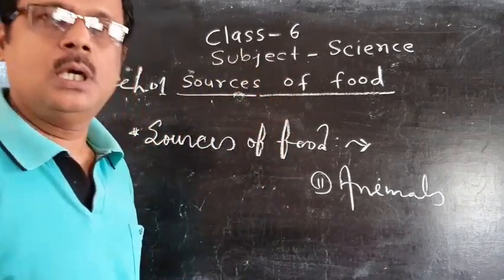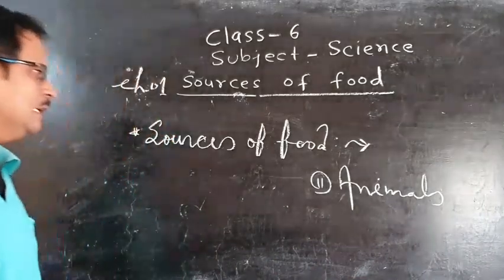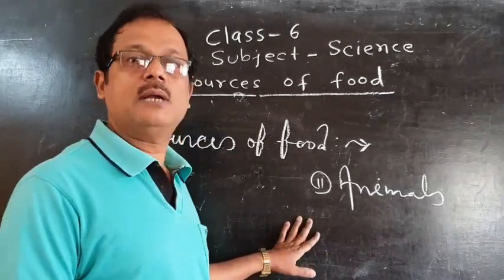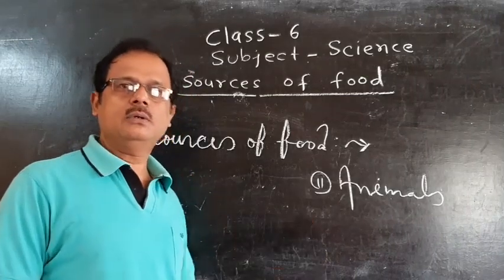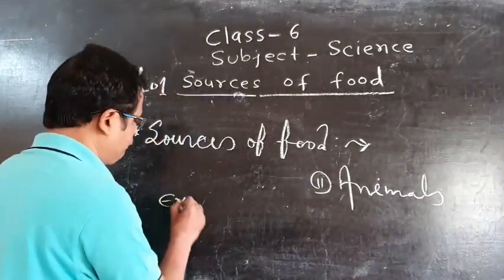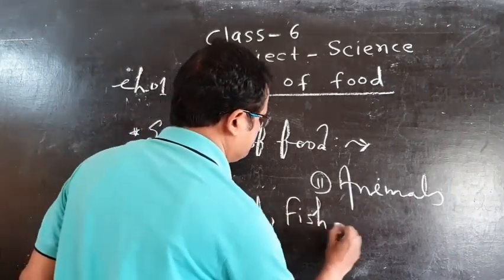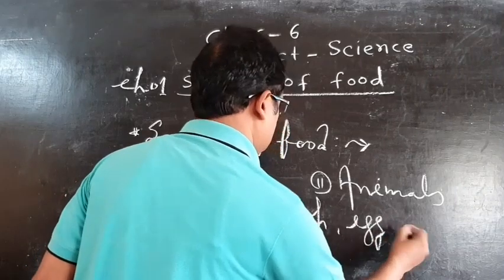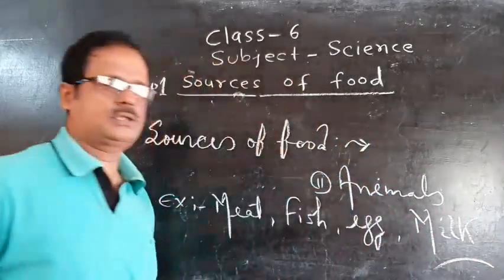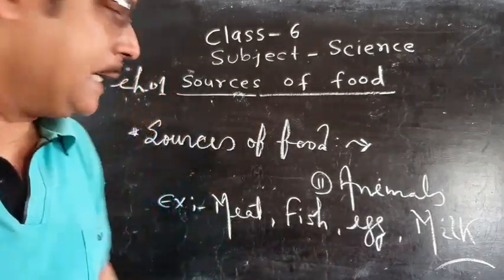Now, the next source is animals. We obtain various types of food material from animals, and everybody likes food obtained from animals nowadays because animal food is more nutritious. They possess high nutritional value. Examples of animal food include meat, eggs, and milk. These food materials are highly nutritious.